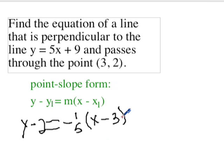So let's distribute the negative 1 fifth here. We get negative 1 fifth x plus 3 fifths.